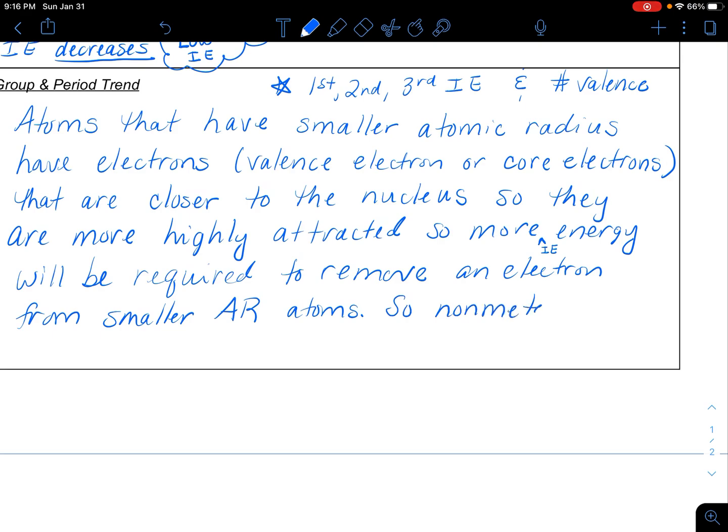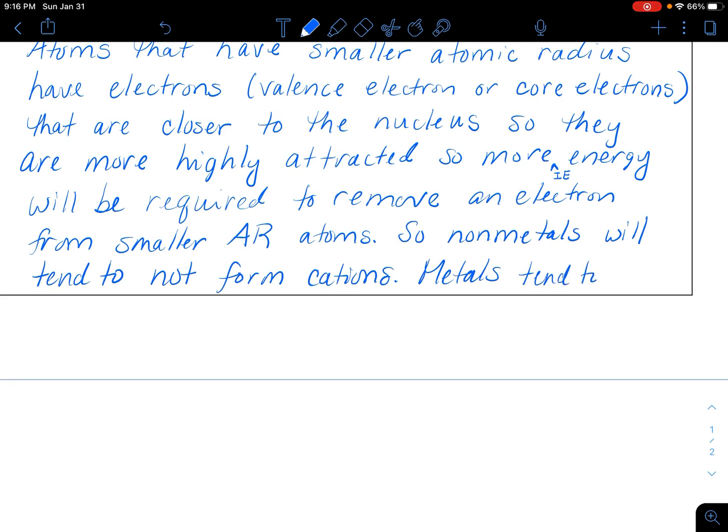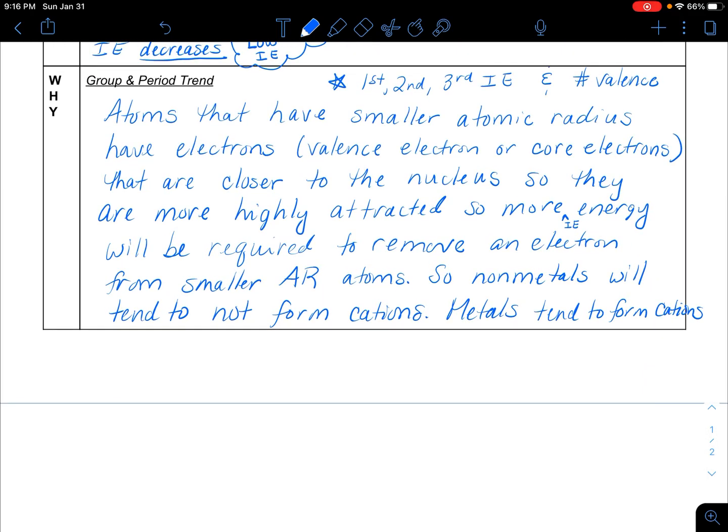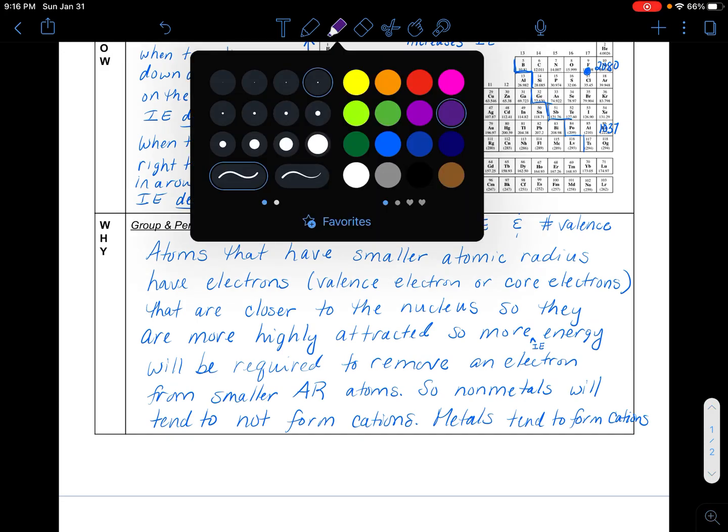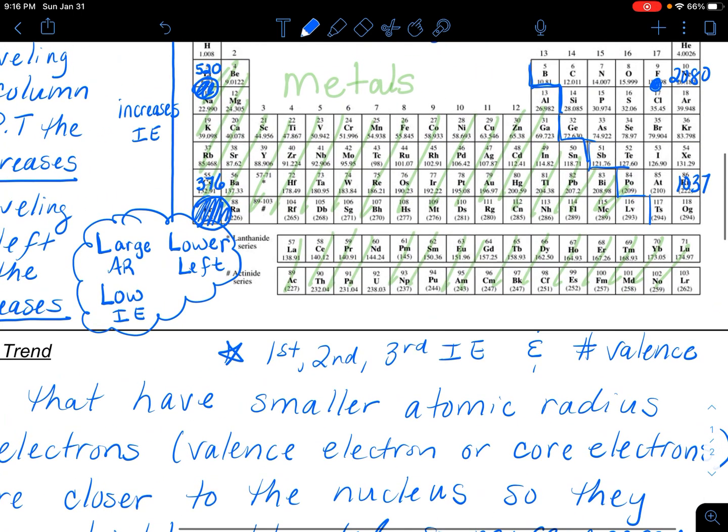So here in the end, you might want to say, so nonmetals will tend to not form cations, whereas metals, they will have much lower ionization energies and tend to form cations. And that's super important here as you go on to more chemistry, that we really need to know. We really kind of need to know that this whole swath, even including the lanthanides and actinides here, this whole swath of the periodic table are metals, and the metals tend to be larger. I think I said that again in the previous video.